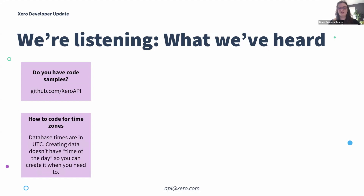We also got a pretty interesting question: how to code for time zones. Obviously if you have a specific endpoint you're really struggling with, you're welcome to contact us. But broadly speaking, all of the database times that we have are in UTC — things like last modified date, created date, and that kind of thing. You'll see that in the API reference documentation on the developer center. We don't really have a concept of the time of day; it really just gets created at the point in time as a UTC date. If you have something specific, please do contact API support.